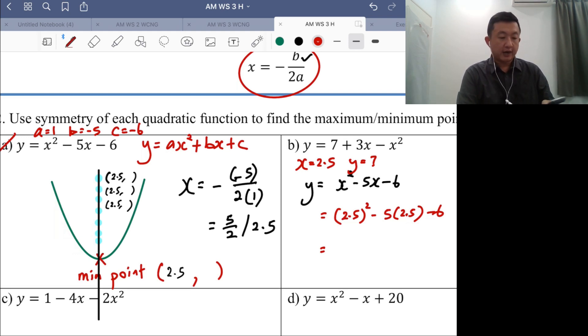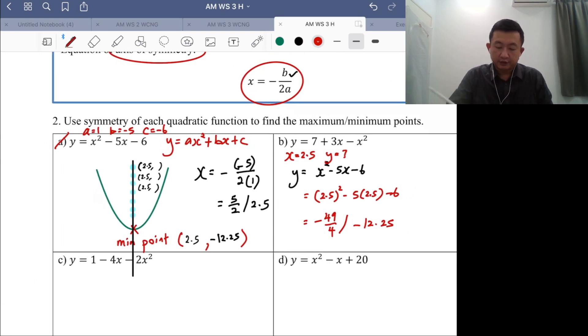And you can calculate the answer using the calculator and figure out the value of it. In this case, you have negative 49 over 4 or in decimal places negative 12.25. So you are done. So you have the value of your minimum point in this case. This is your answer. Minimum point equals 2.5 comma negative 12.25.